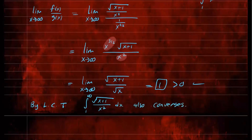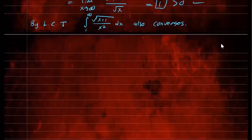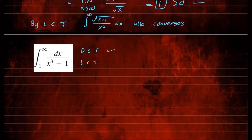This is by the limit comparison test — not the direct comparison test, because the direct doesn't help here. Pause the video and see if you can do the next problem. For number two, we want to see whether this will converge or diverge, and we'll see which test is applicable. For this function, you can use both the direct and limit comparison tests — both are applicable. But since the purpose of this video is to explain the limit comparison test, I will also do it using limit comparison.